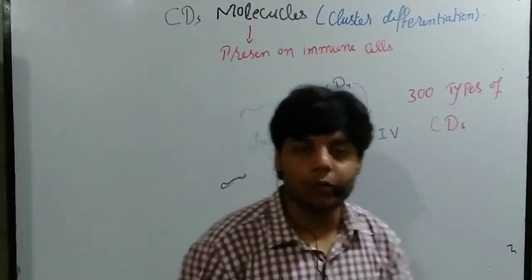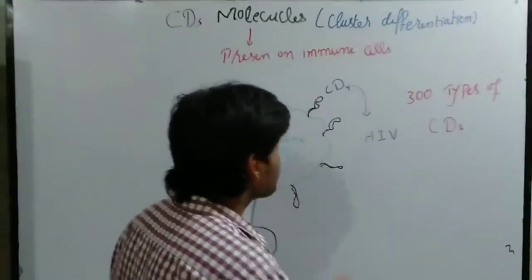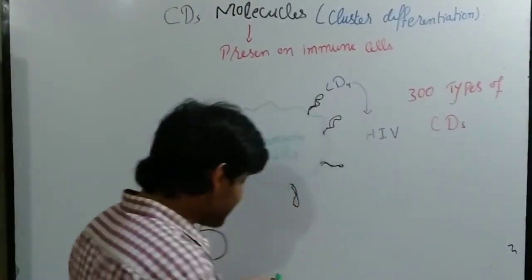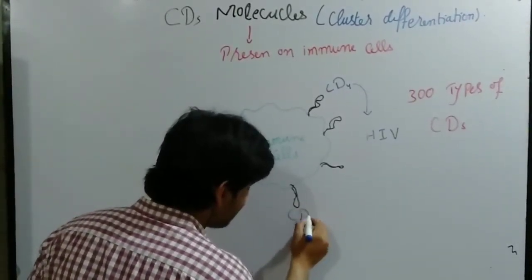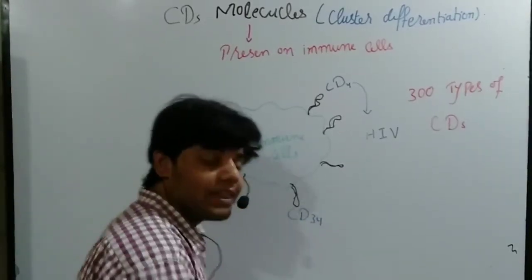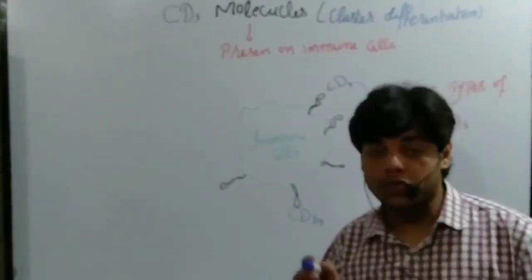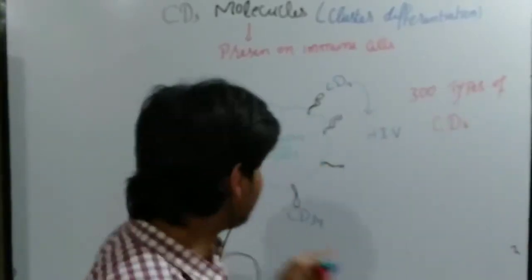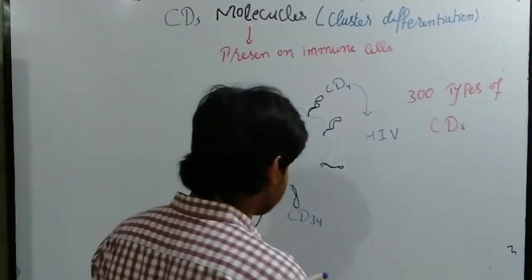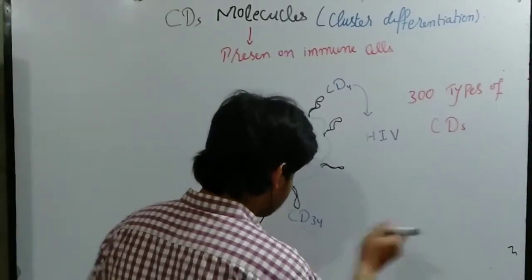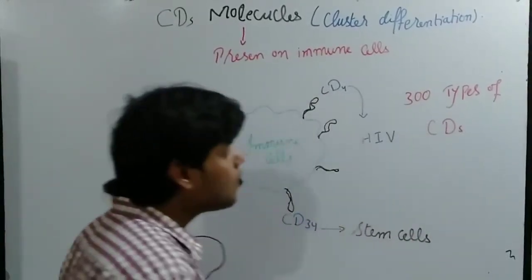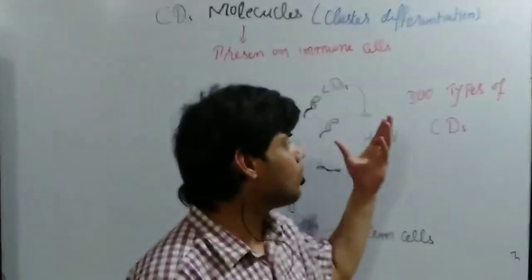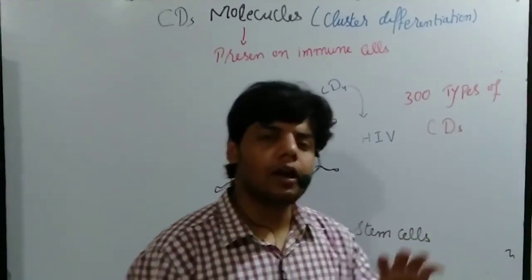If you missed that video lecture, it is available and you can watch it. Moreover, if a cell has CD34 proteins or receptors, then we call that cell a stem cell.